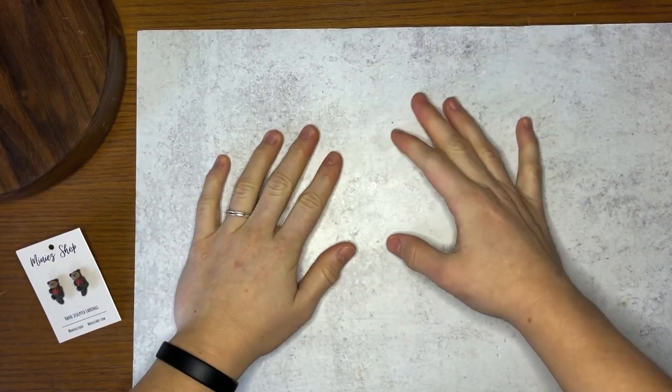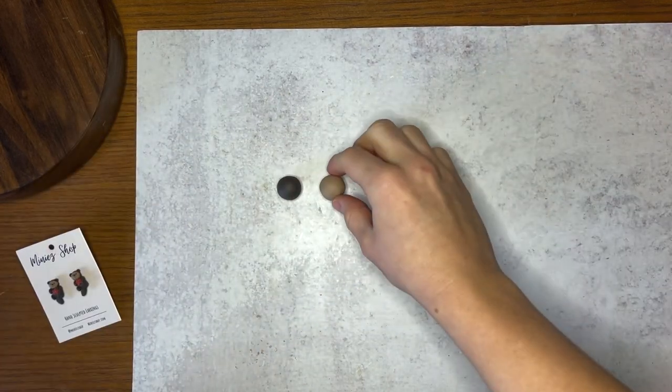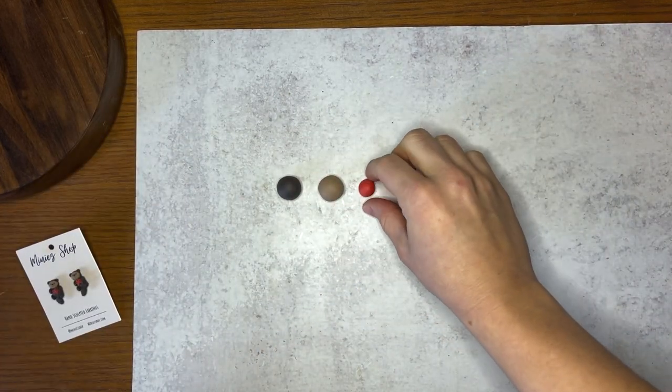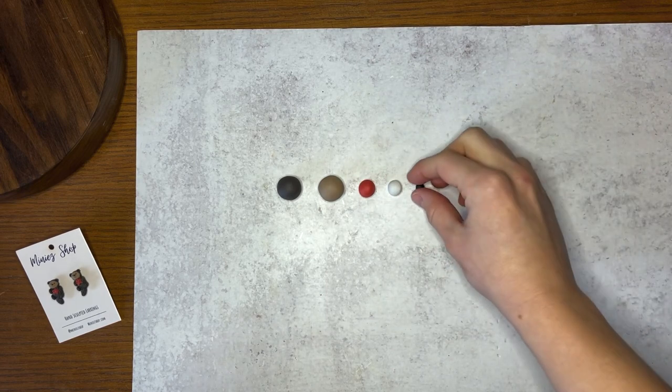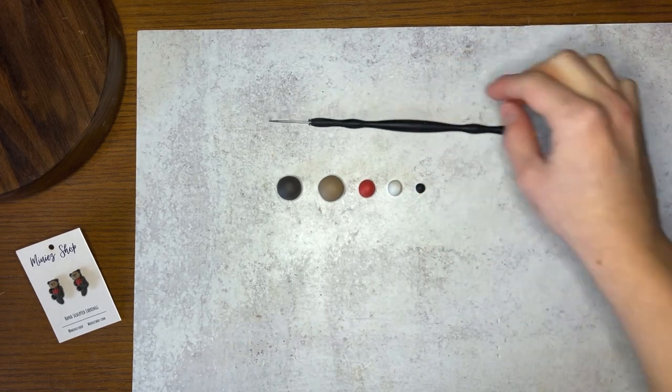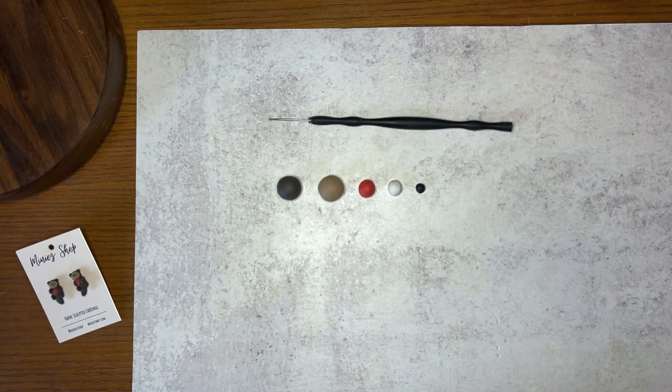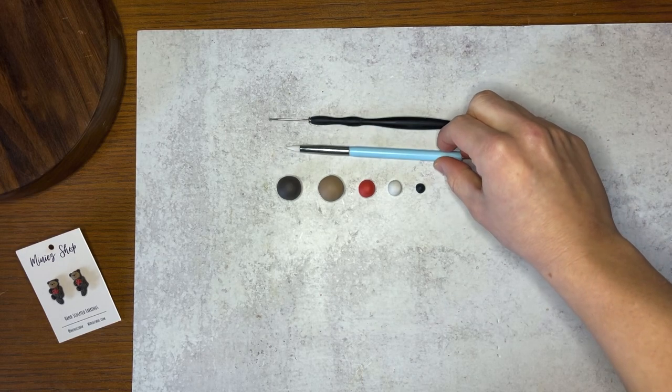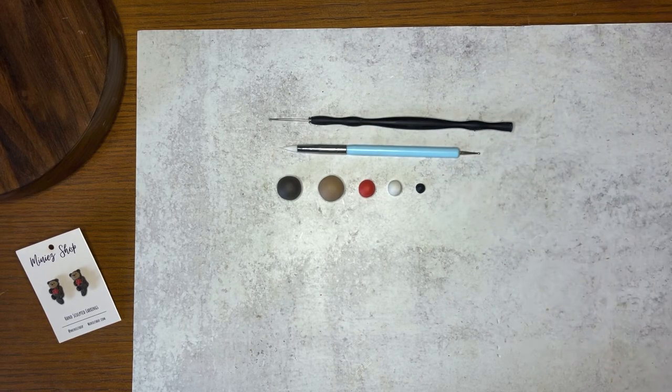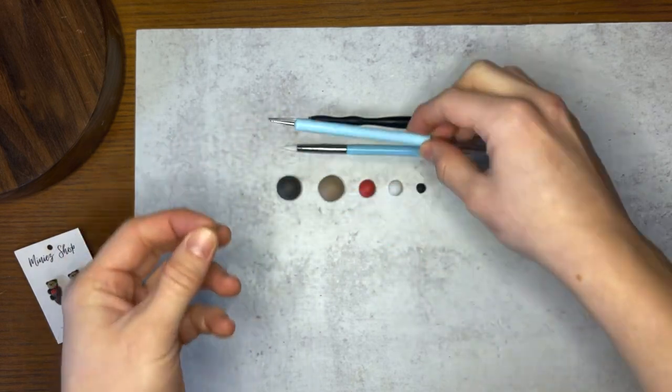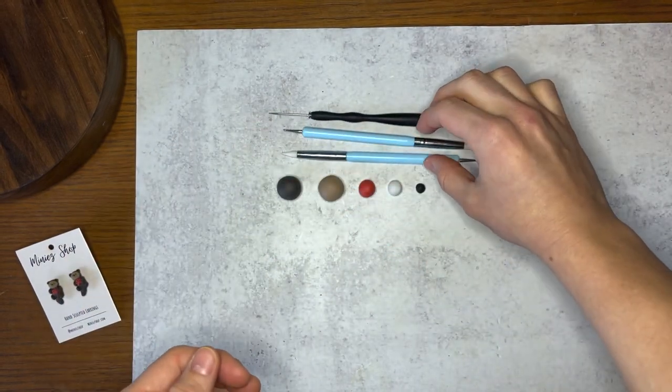To begin, you'll need a work mat to protect your tabletop. A piece of paper will work just great. Some dark brown clay, light brown clay, coral colored clay, a little bit of white clay, and a little bit of black clay. You'll need a potter's needle, but a toothpick will work great, a silicone dowel tool, or you can use a pen or pencil tip, and a tool with a little ball end, but you can also use a pencil tip for that.